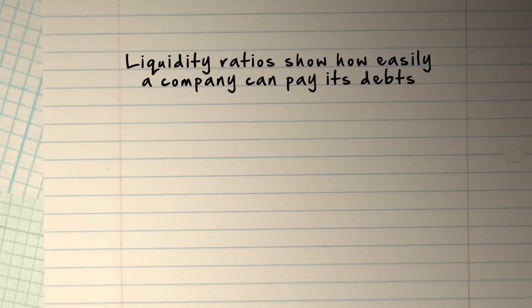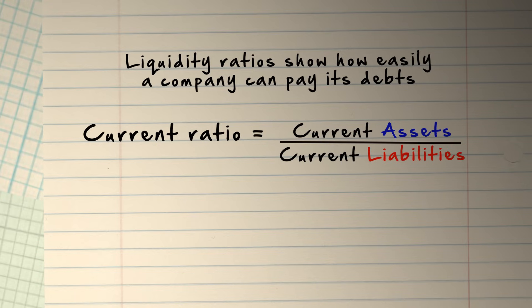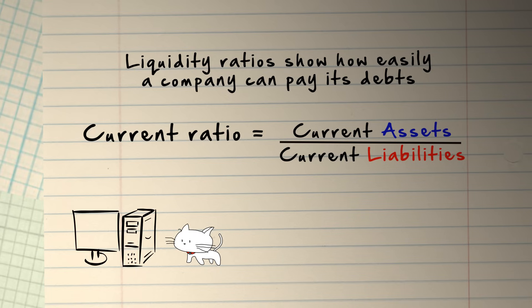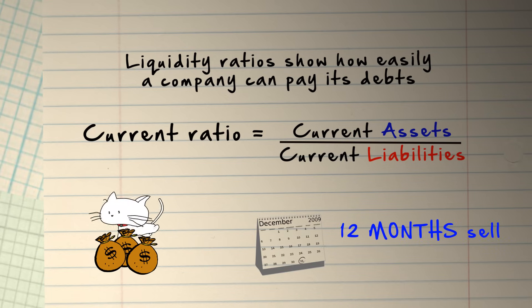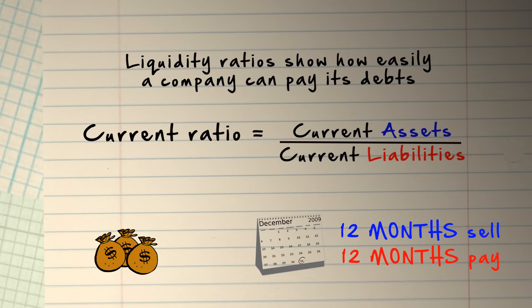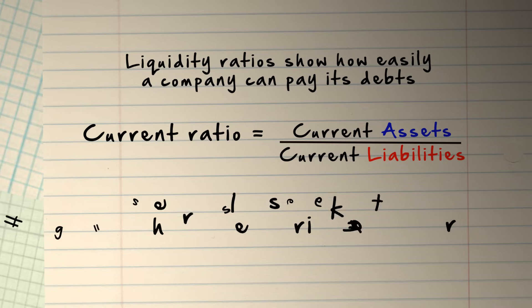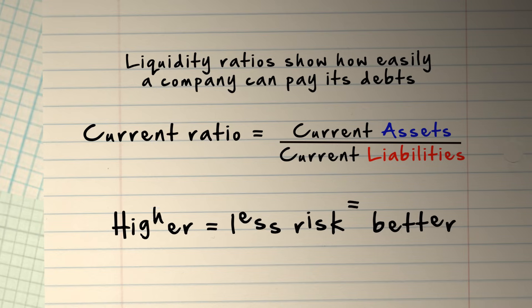An example of this is the current ratio. This tells us how much of your company's stuff can be easily changed into cash within the next 12 months, so that it can pay debts which need to be paid also within 12 months. The higher your current ratio is, the less risky a situation your company is in.